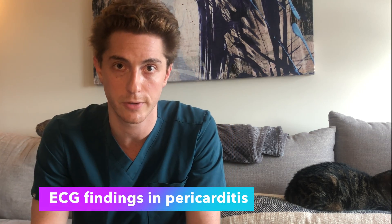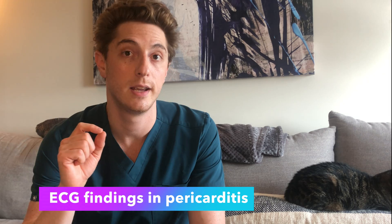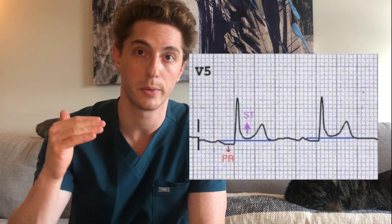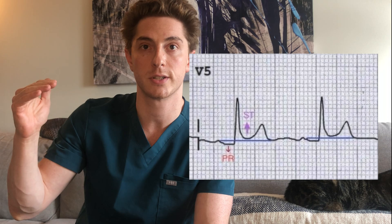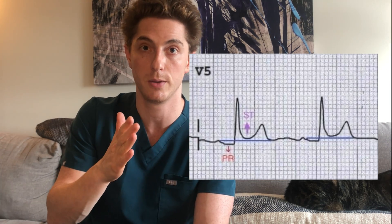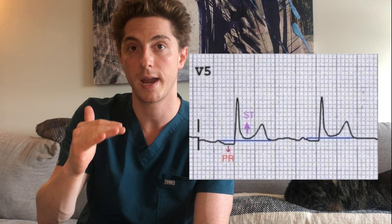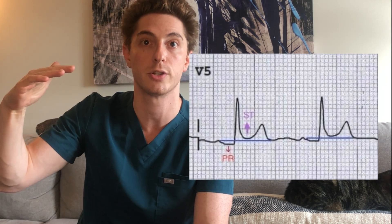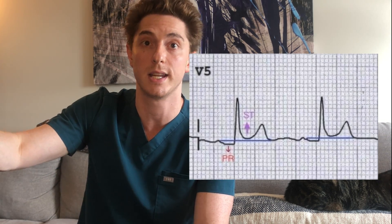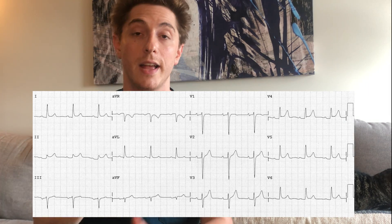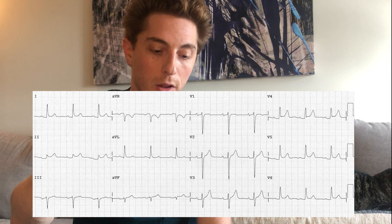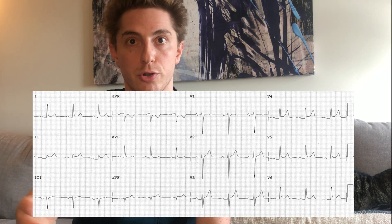Now let's focus on the EKG for medical trainees. In classic pericarditis, the EKG changes are PR depression along with ST elevations. You want to look at the TP segment — the end of the T wave to the beginning of the P wave — to compare the PR depression and ST elevations to, because that's the true isoelectric point where the heart is at rest. These ST elevations are going to be diffuse and won't follow a classic coronary distribution.